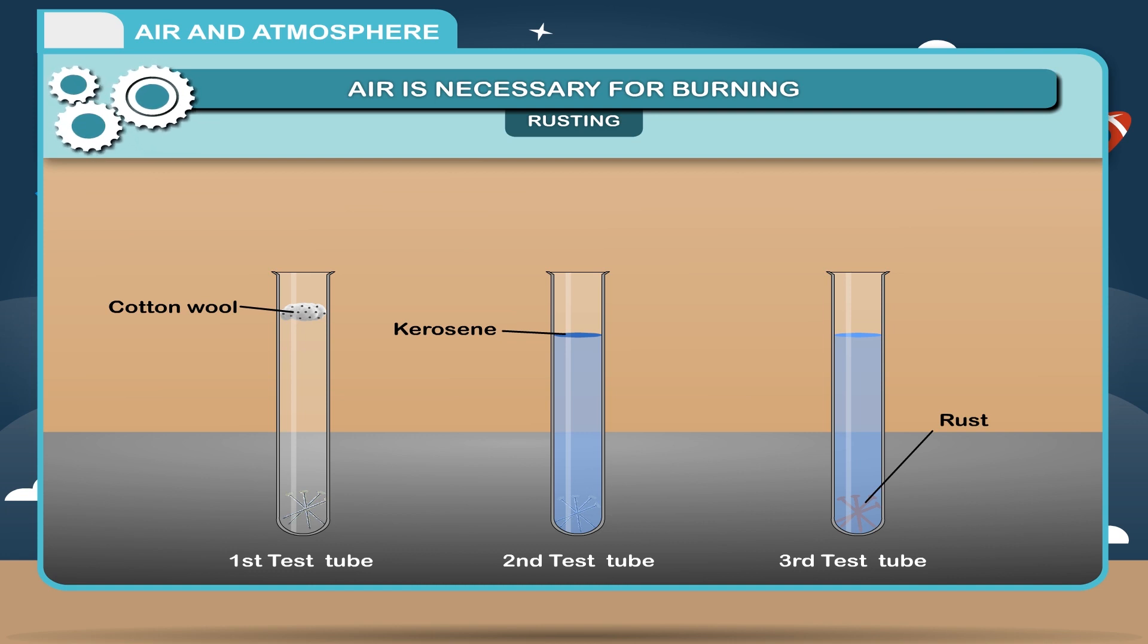The reason is obvious. Nails kept in first test tube got air but no moisture. While in second test tube, nails got moisture but no air. Hence, we conclude that both air and moisture are required for rusting.